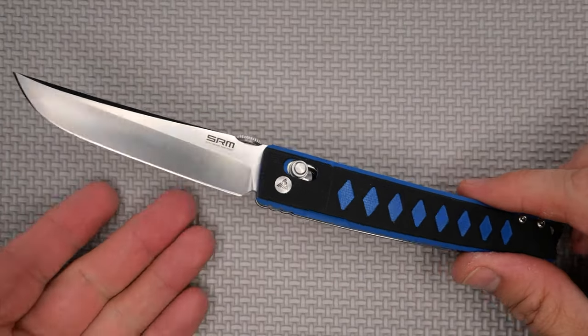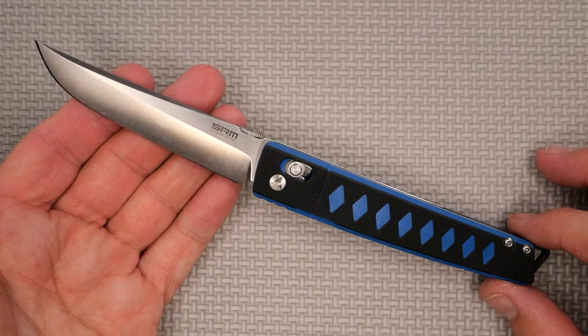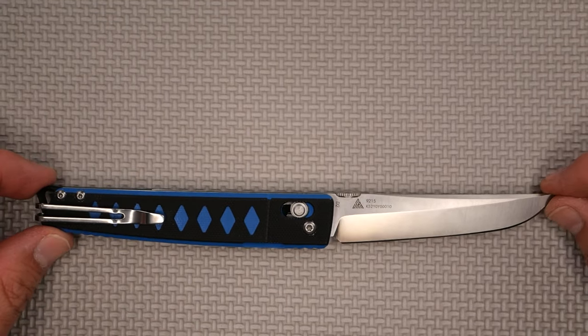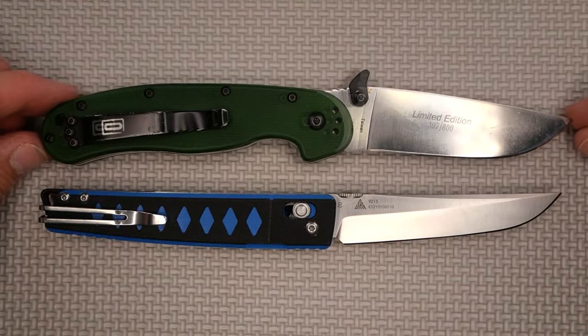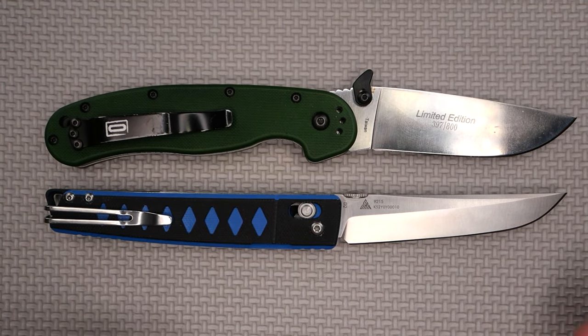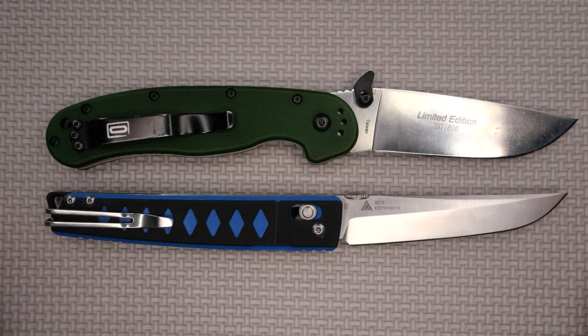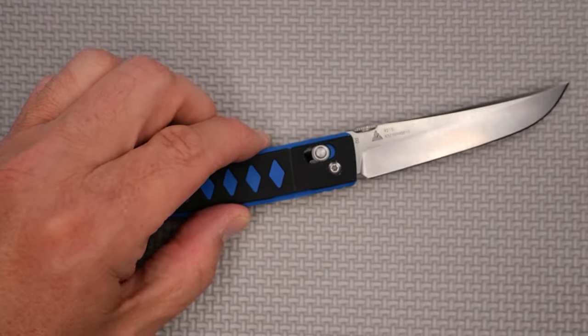I'm using this gray background just to make things a little easier to see over the blue background that I usually have. Let's start this thing off with a size comparison with the Ontario Rat One right here. Line up those pivot pins. Yeah, it's pretty close to the same size. It's just a tiny bit shorter than a Rat One, which makes it a full-size knife.